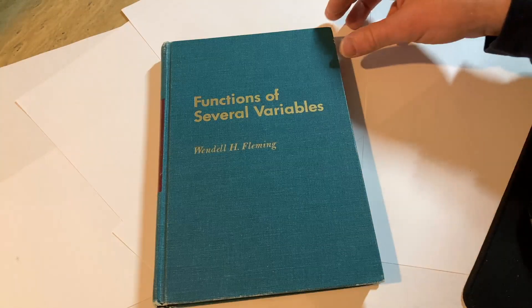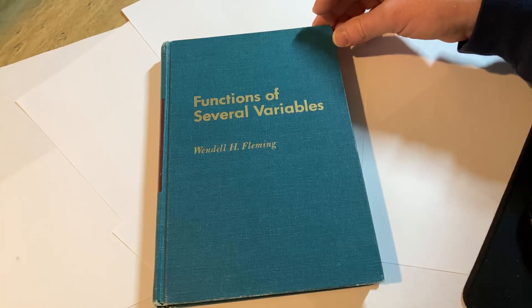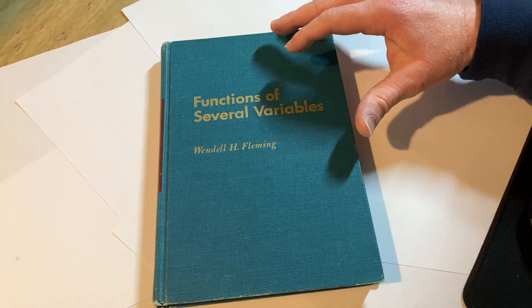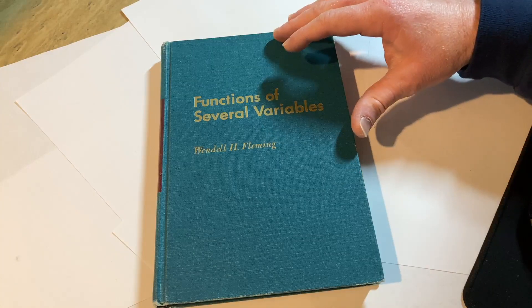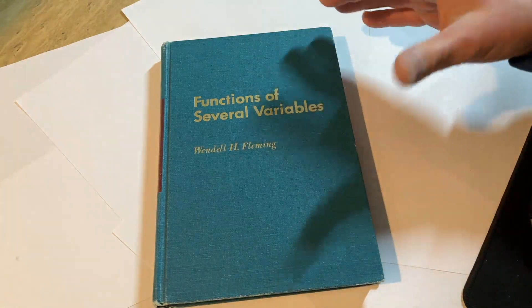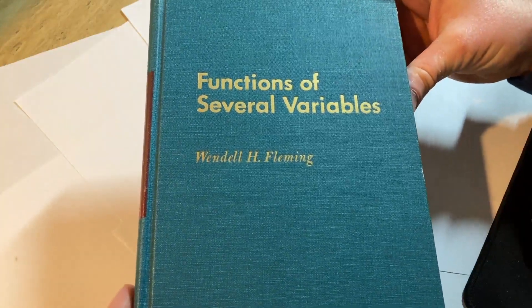I posted a video on a book on multivariable calculus, and a lot of people wanted to know what is a good book that treats multivariable calculus but has proofs. This is a book that does that. It's called Functions of Several Variables, and it was written by Wendell H. Fleming.